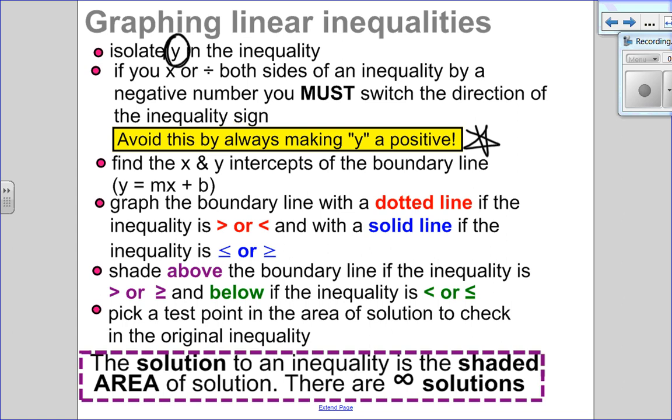Once I know my inequality, I'm going to find the x and y intercepts of the boundary line. I'm going to graph it with a dotted line if the inequality doesn't have an equal sign, or with a solid line if the inequality has an equal sign. I'm going to shade above the boundary line if the inequality is greater than, and below it if it's less than. Once I'm done that, I'm going to pick a point in the area of solution. Because there is an area of solution, there are infinite solutions.